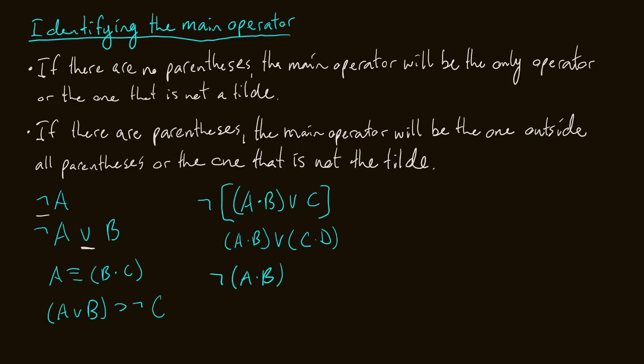Next: A≡(B·C). We have parentheses, so the main operator is the one outside all parentheses — that's the biconditional, 'if and only if,' so that is our main operator. Then we have (A∨B)⊃~C. We have parentheses, and outside all parentheses we have a horseshoe and a tilde. The one that is not the tilde is the horseshoe, so our conditional is the main operator.